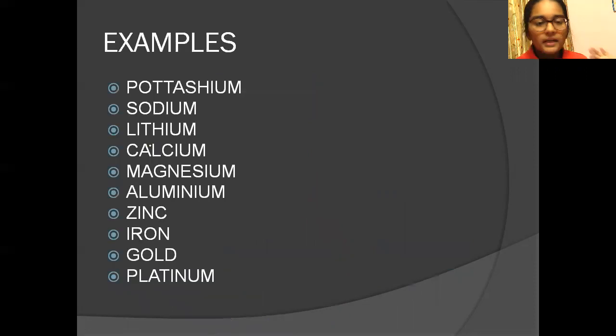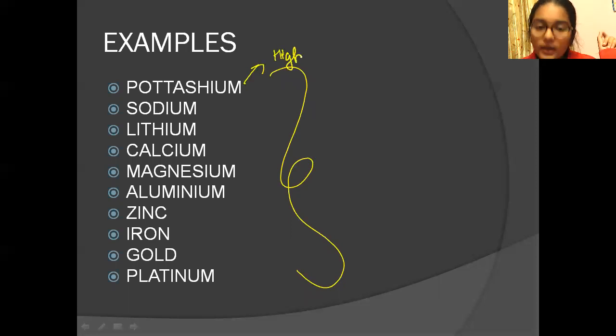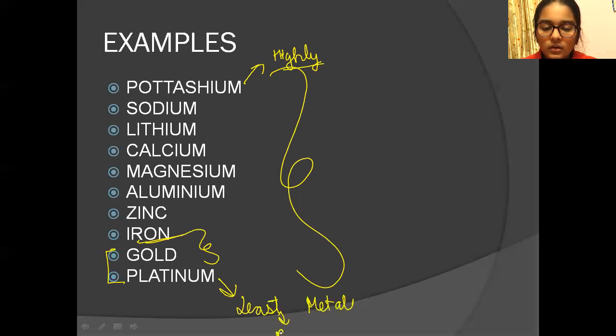So that is our metal. So in one way I made a reactivity series that the highly reactive metal is our potassium, sodium, lithium, calcium, magnesium, aluminum, zinc, iron, and then after there are more many metals but I have not written. But here, last two metals, means platinum is the least reactive metal, least reactive metal. So it's the least reactive metal, gold, first, first gold, okay? So the least reactive metal is platinum and the most reactive which is our metal is potassium.